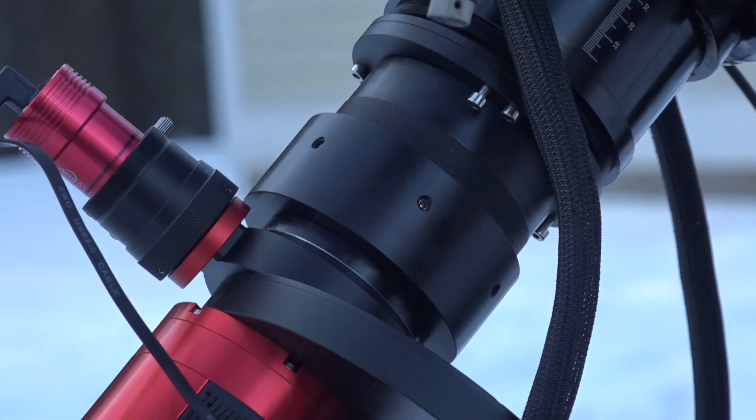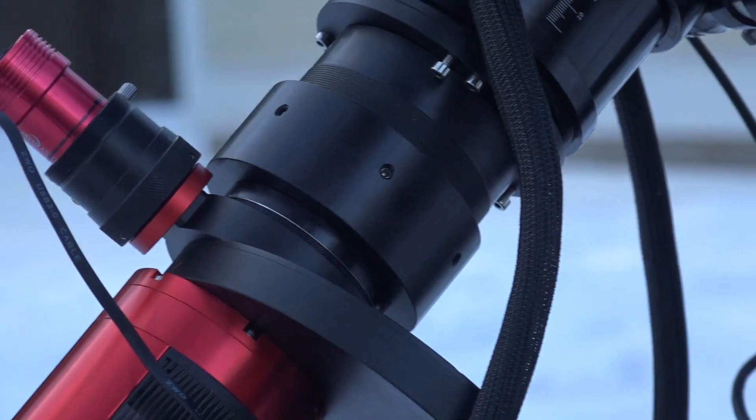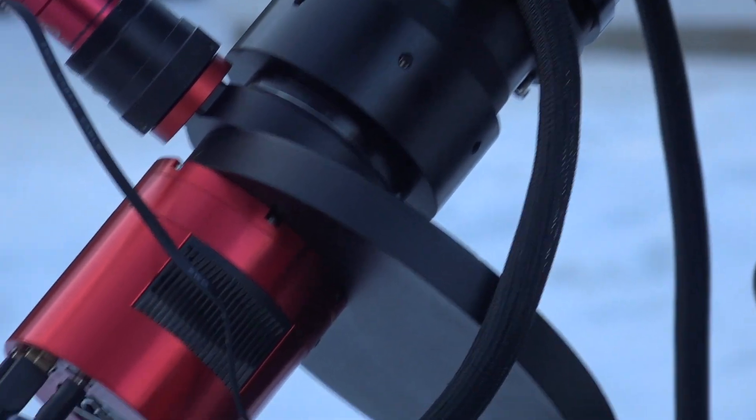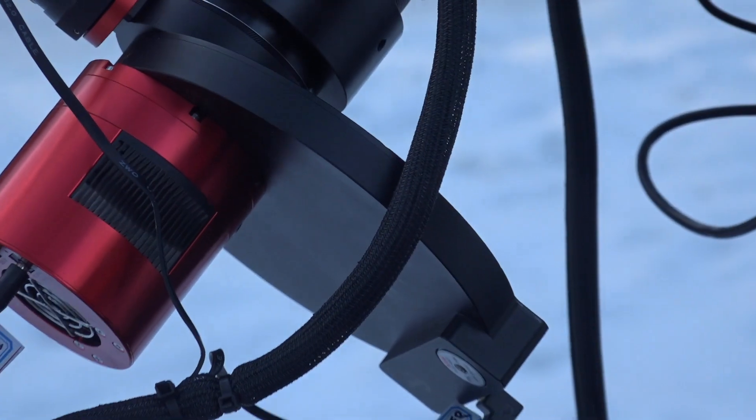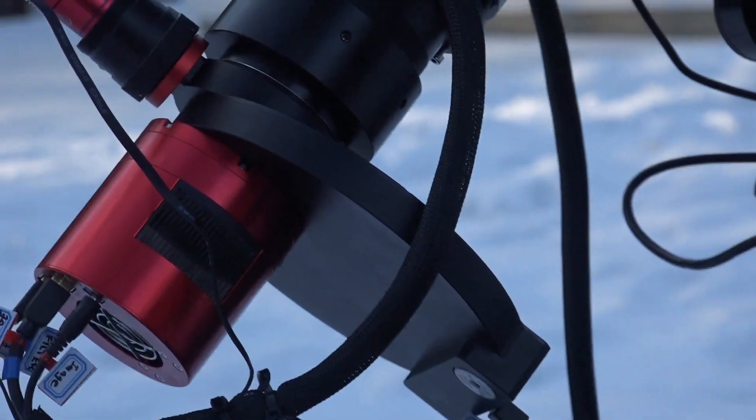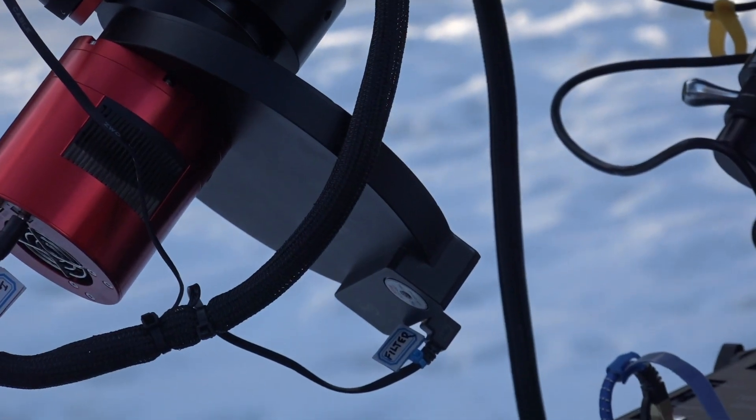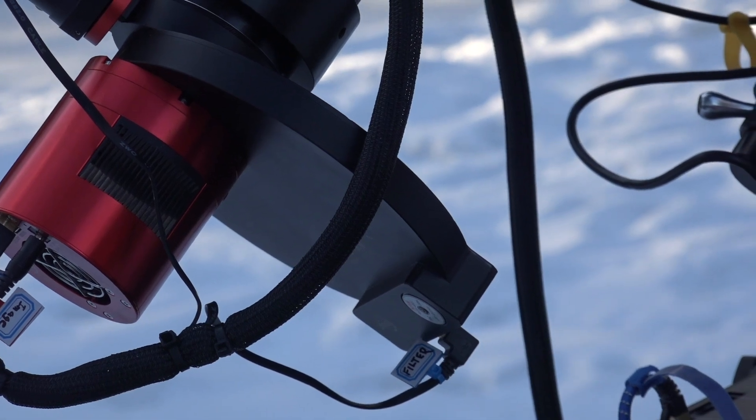The main amount of light goes through this filter drum, which is my electronic filter wheel, and it has seven positions. Right now I've got four filters: luminance, red, green, and blue filters, and it's driven electrically.